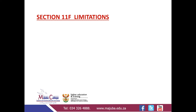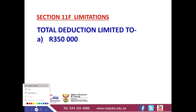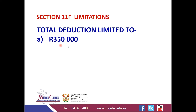Section 11F provides that contributions to the retirement fund will be limited. The total contributions will be limited to the lesser of R350,000. Remember, R350,000 is a fixed rule — it's provided by the provisions of section 11F, subsection A of the South African Income Tax Act. Most people ask how you determine R350,000; it is simply a fixed rule provided by section 11F.